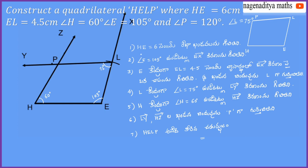Draw a line segment HE equal to 6 cm, and from point E draw a ray EX such that angle E equals 105 degrees. From point E, draw an arc with radius EL equal to 4.5 cm; this arc intersects ray EX at L. From point L, draw a ray LY where angle L equals 75 degrees, and from H draw ray HZ with angle H equal to 60 degrees. The point of intersection of ray LY and HZ is denoted by P, giving us the required quadrilateral HELP.